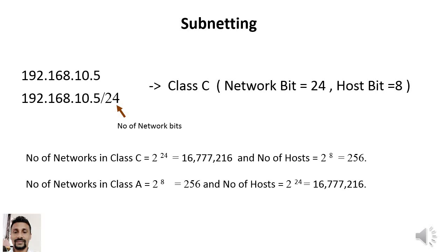As mentioned earlier, subnets are used for our personal requirements. To create a subnet, we need to borrow bits from the host part. If we take the earlier IP address 192.168.10.5 without any subnet, we can create 2 to the power of 8, that is 256 host addresses, for each network.